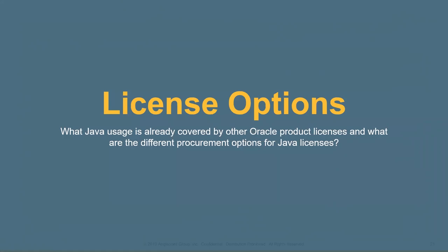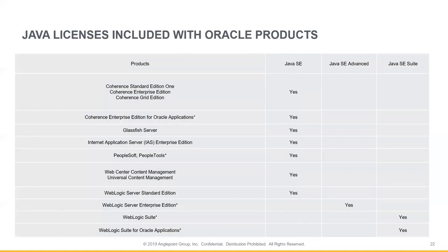Once you've gone through that series of questions and figured out whether your Java usage needs licensing, you can start thinking about your licensing options. If you're already an Oracle customer, the first step we recommend is to check whether any of your usage is actually covered through an existing Oracle program license. On the left column we see the Oracle products which have Java SE already included as a component — meaning if the Java usage maps back to any of these programs, you're already covered and there's no need to double license.